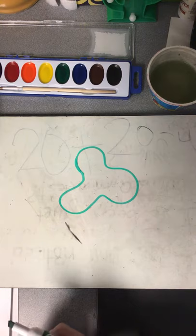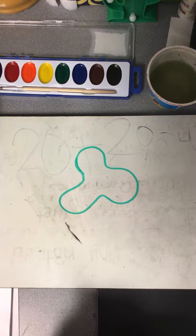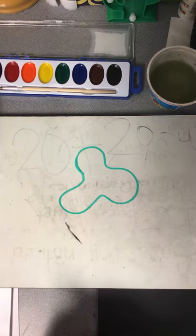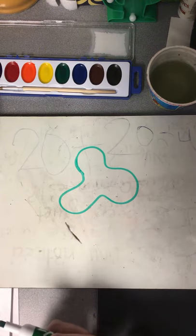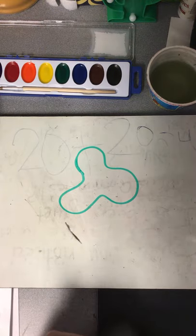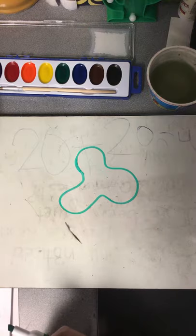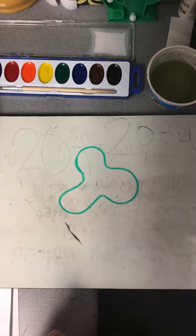Not all shapes around us in the world can be grouped into our basic shapes of squares, circles, triangles, or ovals. Some shapes are unusual and they don't fit into those basic geometric shapes — they're a little bit more unique.